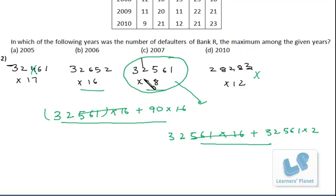So already two options we eliminated and from the remaining two options this one is bigger. So finally this one is bigger. So 2007 is the correct choice. 2007 is the year when the number of defaulters of Bank R were maximum. So I hope you are clear. Instead of multiplying them I split them. I split this number corresponding to this number. So I hope you are clear.